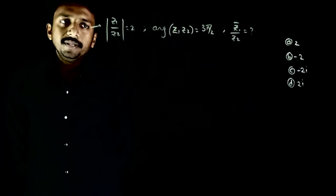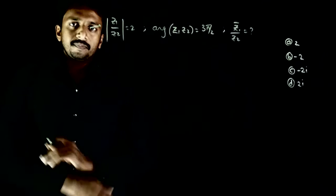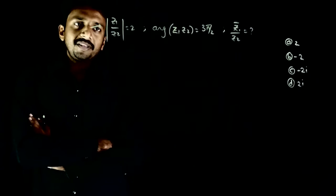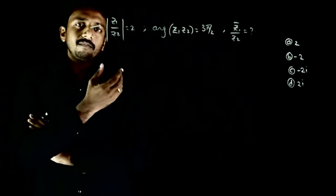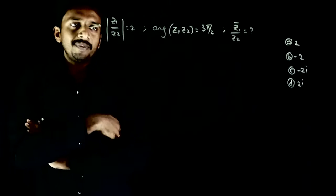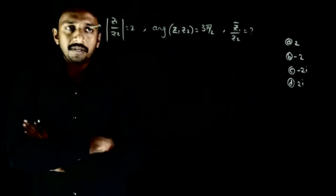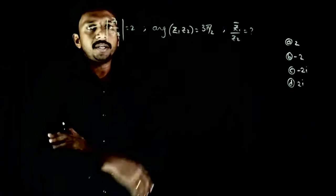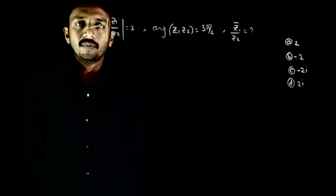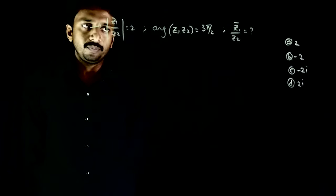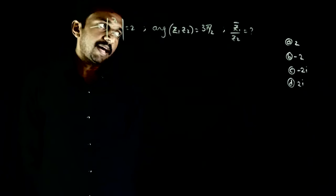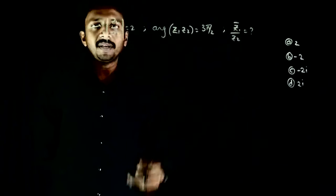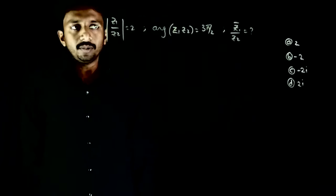Welcome students. In this question, we are given mod of z1 by z2 is equal to 2, and argument of z1 into z2 is equal to 3π/2. Given this, z1 bar by z2 is equal to what?